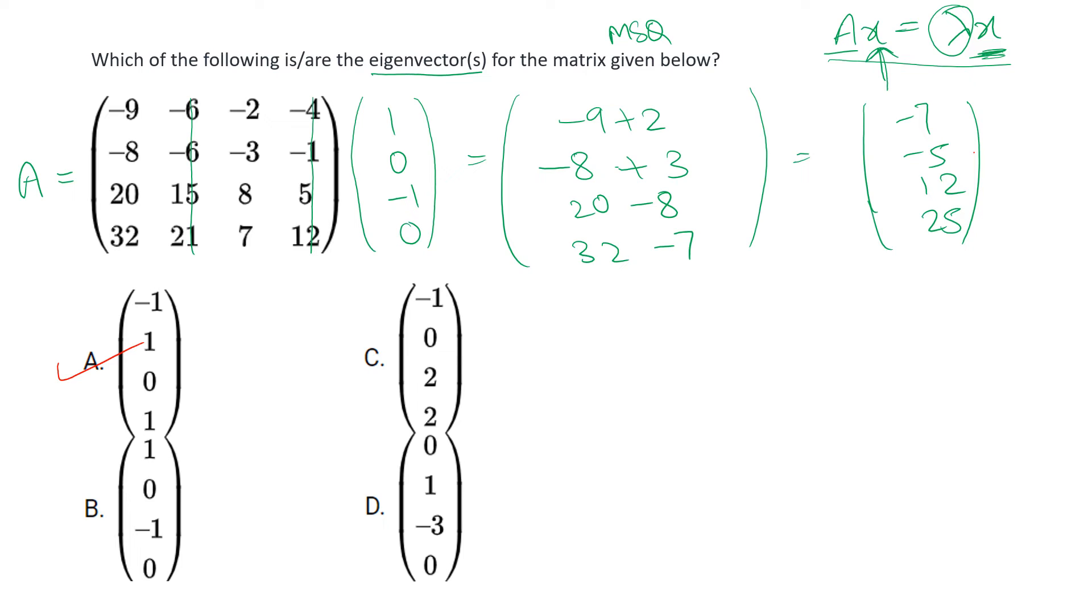So this will be minus seven, minus five, twelve, twenty five. From this one we cannot take anything outside because there is no common factor with all four terms, so it is not equivalent to lambda times x. We will be discarding option B, it is not an eigenvector for the given matrix.